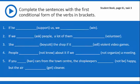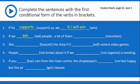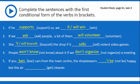Let's have some more practice. Use the verbs in brackets in the appropriate form. Again, you can pause the video, try to do the task on your own, and then check your answers. Are you ready? If he supports us, we'll win — or we can write, we will win. If we ask people, a lot of them will volunteer. She'll boycott the shop if it sells violent video games. People won't know about it if we don't organise a meeting. If you ban cars from the town centre, the shopkeepers won't be happy but the air will get cleaner.